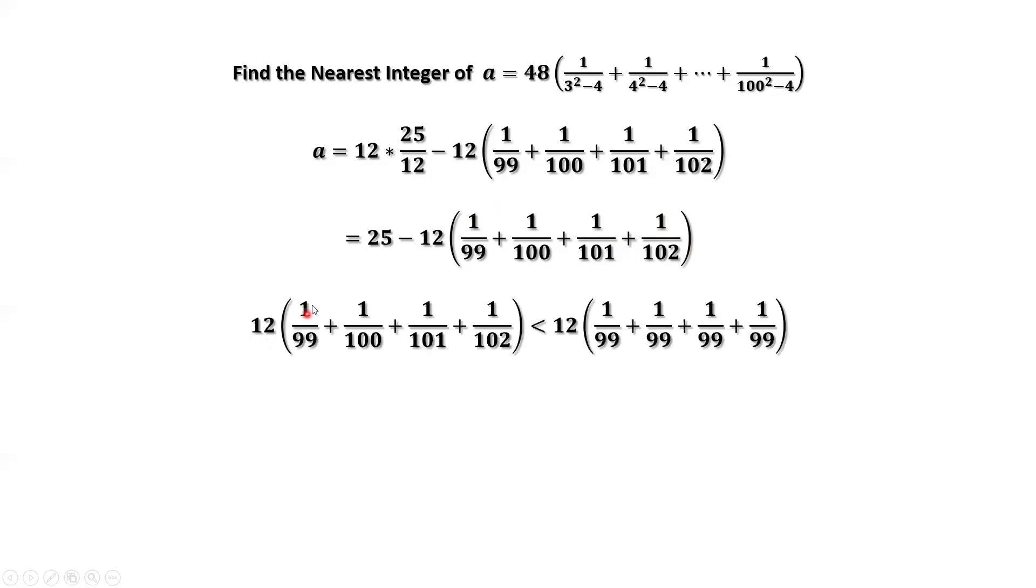12 times 1 over 99 plus 1 over 100 plus 1 over 101 plus 1 over 102. We can replace the second, third, and fourth terms by 1 over 99, because 1 over 99 is bigger than each of the last three terms.